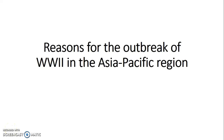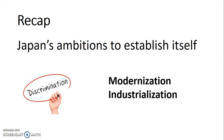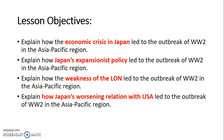Hello, today we're going to be talking about reasons for the outbreak of World War II in the Asia-Pacific region. In the previous lessons, we have broadly studied certain things about Japan — for example, Japan's ambitions to establish itself, its plans to modernize and industrialize itself, as well as the fact that Japan was enduring discrimination by the Western powers. If you're not sure, refer to the Washington Naval Conference in 1921.